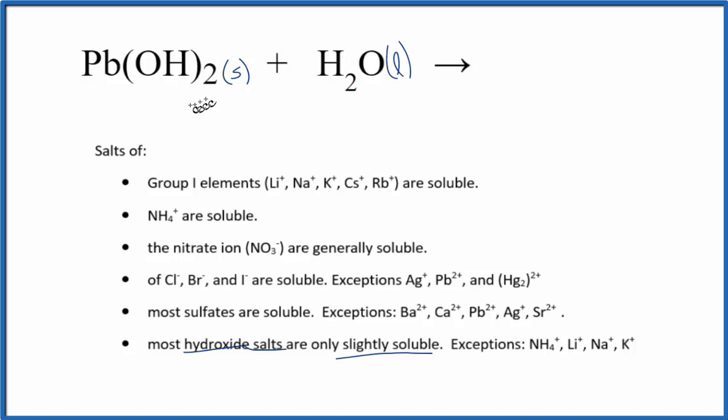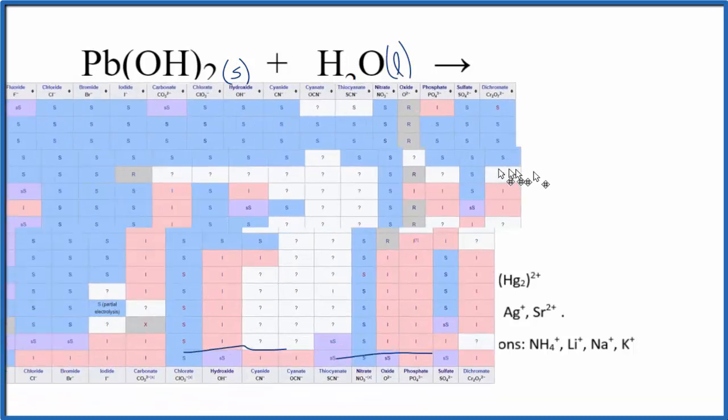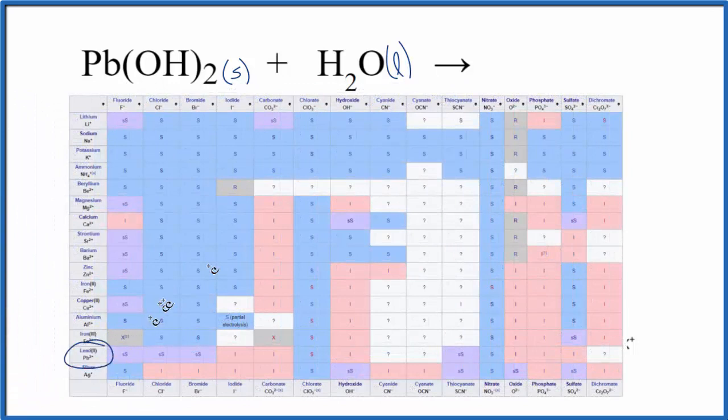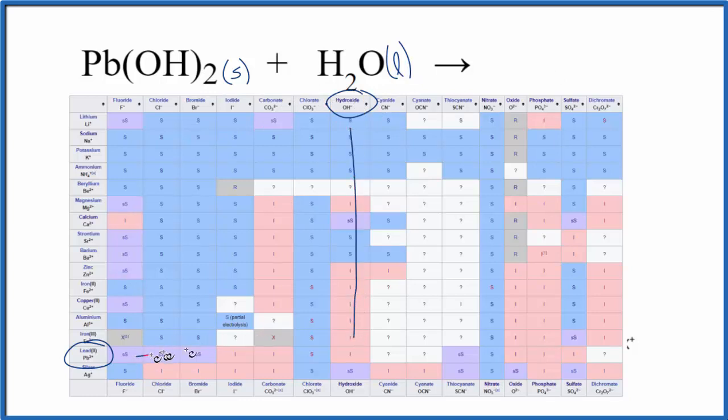We can check this on a solubility table. Lead(II) is down here. Hydroxide and all the negative ions are on the top. Here's the hydroxide. If we come down and then go across we see that I there. That stands for insoluble.